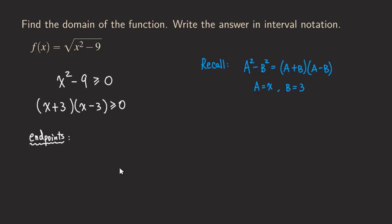If you set x plus 3 equal to zero, then we simply will just get x equals negative 3. And then x minus 3 equal to zero, and then you solve for x, you get x equals 3. So we are getting the two endpoints right here.